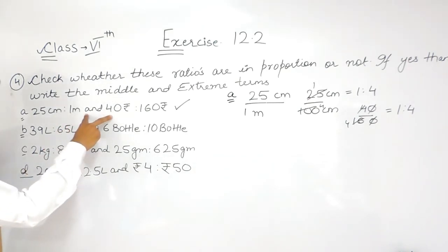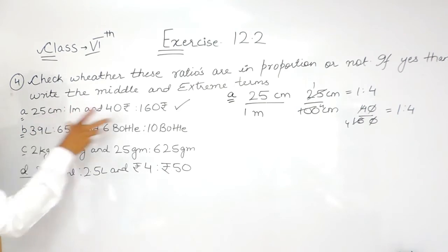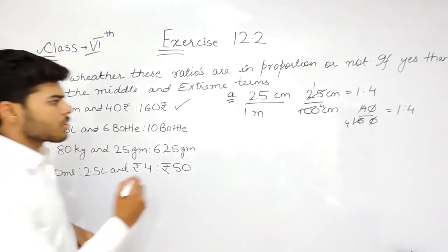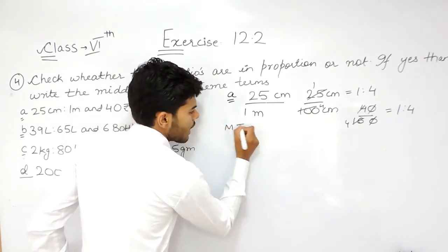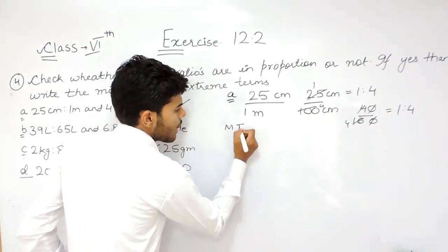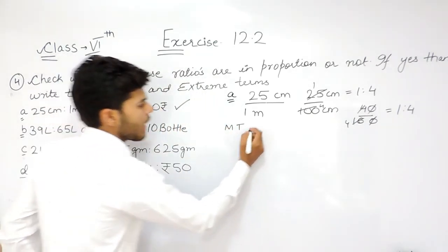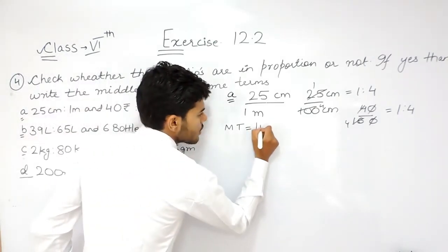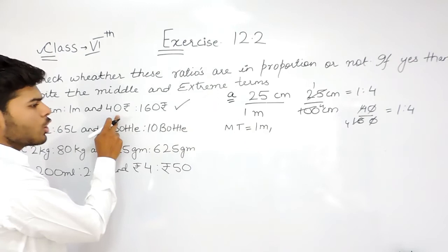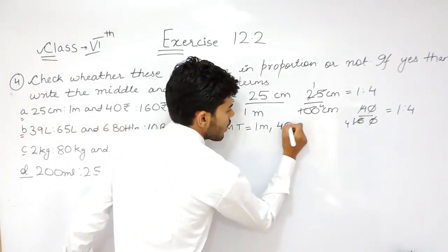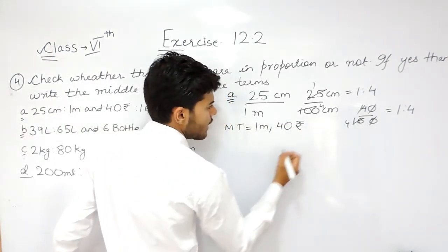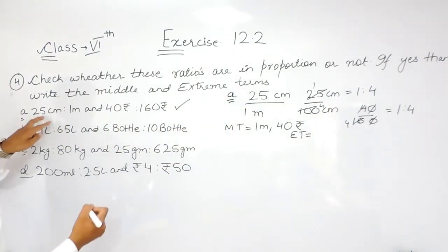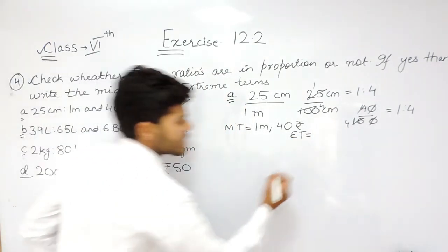Now we have to write the middle and extreme terms. The two terms at the center are the middle terms, and the two terms at the extreme corners are the extreme terms. Middle terms (MT) are 1 meter and 40 rupees. Extreme terms (ET) are 25 centimeter and 160 rupees.